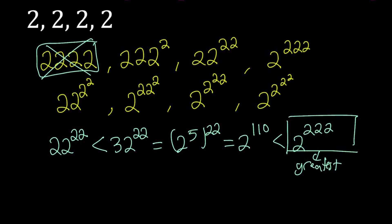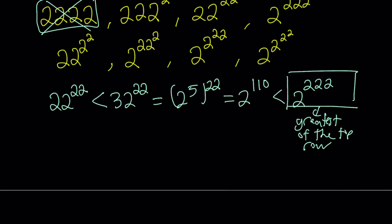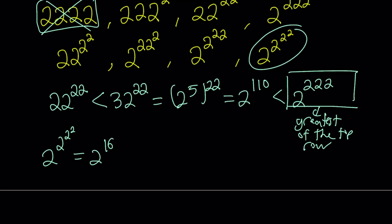We still have to check the bottom row, and then we'll make a decision. If you look at the fourth number from the left, you get 2 to the power 2 to the power 2 to the power 2. Now, 2 to the power 2 is 4, and 2 to the power 4 is 16. So this number just turns into 2 to the power 16. If you compare it to 2 to the power 222 from the top row, you'll notice that 2 to the power 16 is way too small — so we don't have to worry about it.